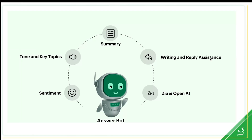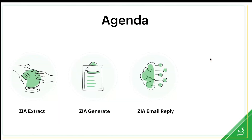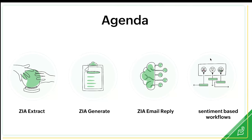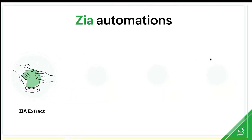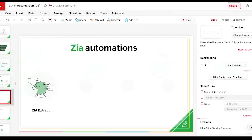For today's agenda, we've got four functionalities. I'm going to talk about Zia Extract, Zia Generate, email reply, sentiment-based workflows, and exclusively AI agents. For Zia Extract, this is about extracting content from either the ticket module, contact module, or any custom module that you have. It will automatically fill out fields inside the ticket for you without having to run a custom function or complicated automation. Let me show you how this looks in live.